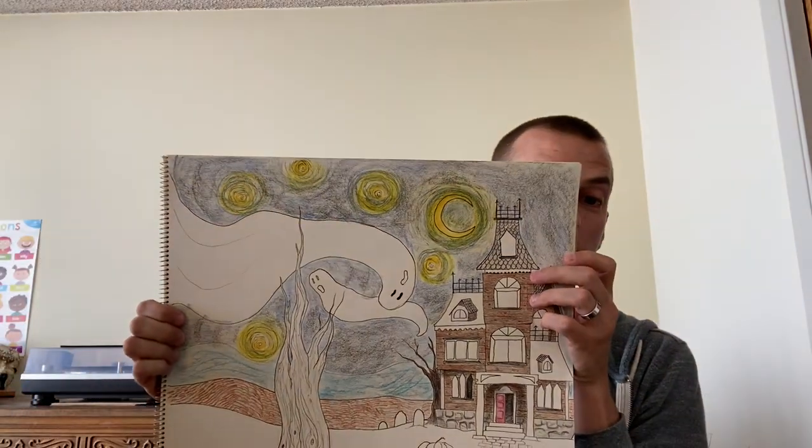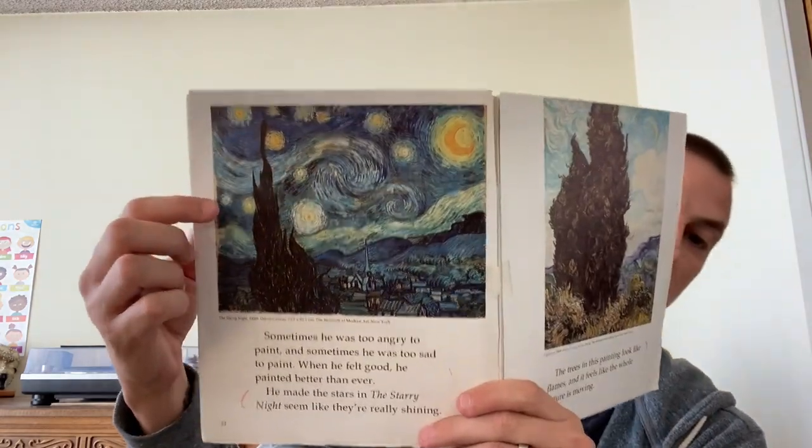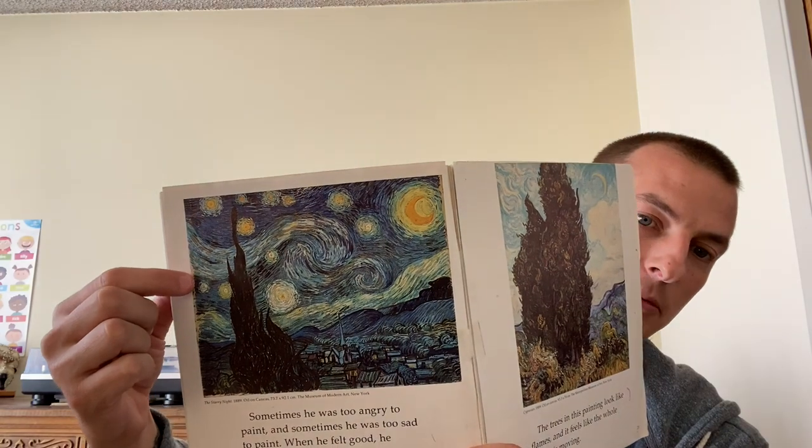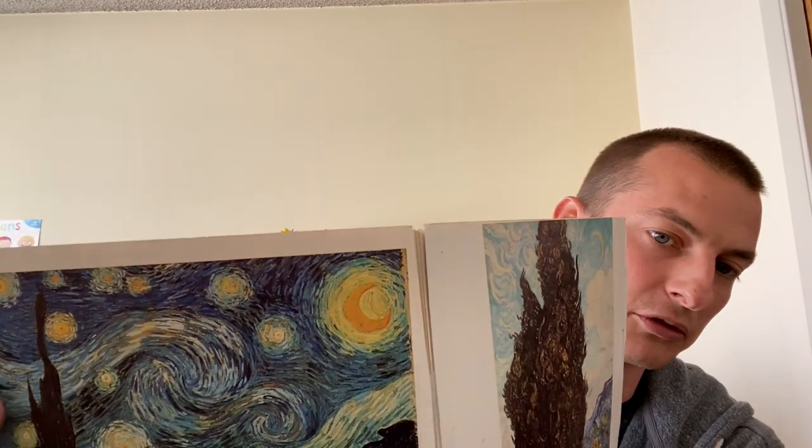So I would like you all to make a spooky starry night and take some of van Gogh's ideas and put them in your artwork. So you might want to put the stars, you might want to put this spooky tree or some of those windy lines in the sky.